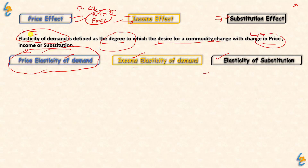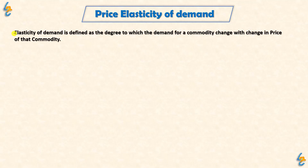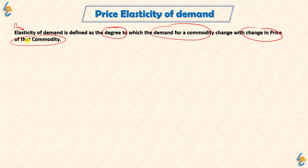If Elasticity of Demand is given without specification, it is the Price Elasticity of Demand case. If it is written as Income Elasticity of Demand, then we are talking about Income Elasticity. If it is written as Price Elasticity of Demand, then we are talking about Price Elasticity of Demand — which is our focus in this video. Price Elasticity of Demand is defined as the degree to which demand for a commodity changes with change in price of that commodity.